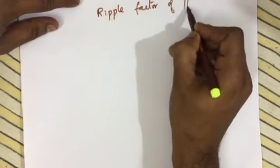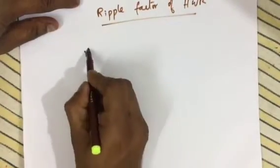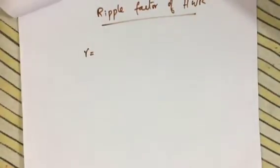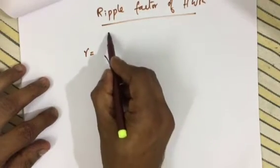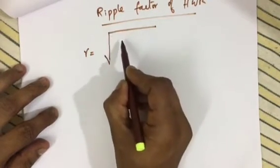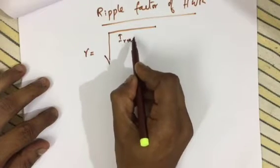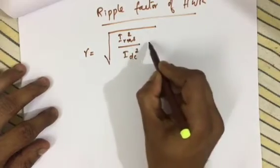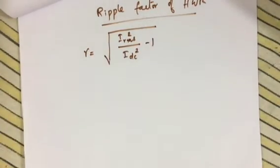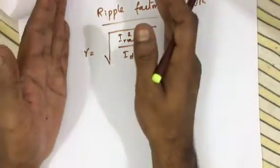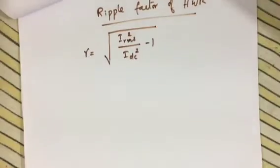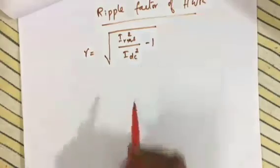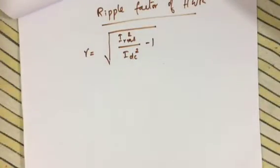Now let us calculate the ripple factor of the half wave rectifier. The formula for ripple factor is: gamma equals the square root of (I_RMS squared divided by I_DC squared) minus 1. This is a ready-made formula for rectifiers. For the half wave rectifier, I_RMS equals I_m divided by 2, and I_DC equals I_m divided by pi.